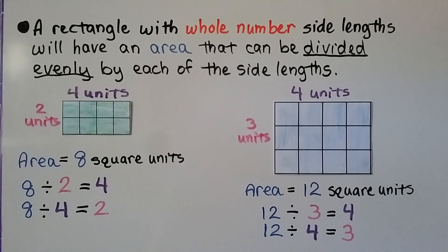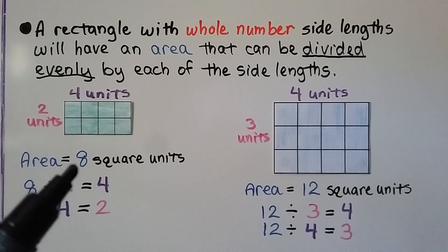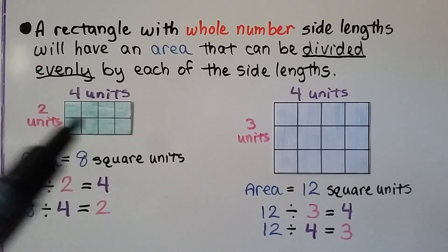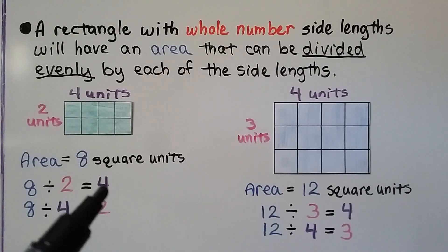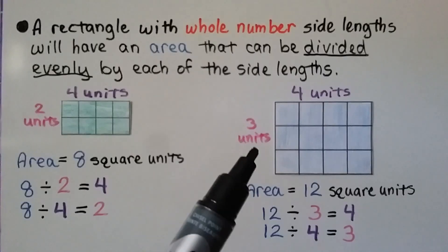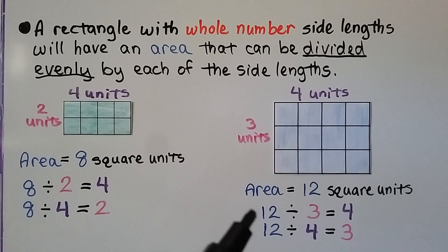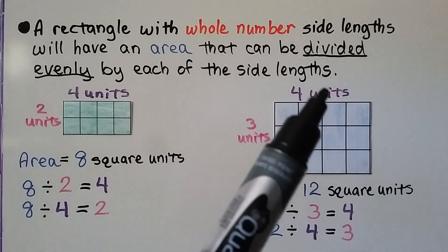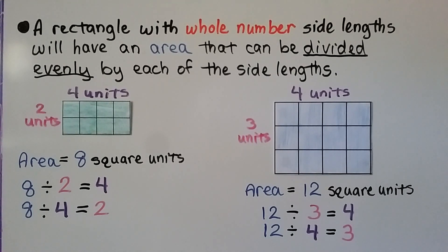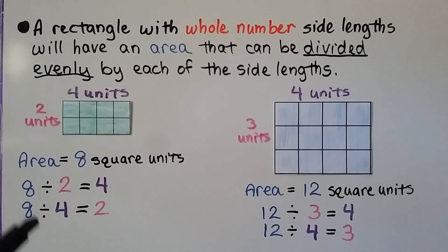A rectangle with whole-number side lengths has an area that can be divided evenly by each side length. For the green rectangle with area 8: 8÷2=4 and 8÷4=2. For the blue rectangle with area 12: 12÷3=4 and 12÷4=3. We multiply length times width to get the area, and we can find a missing side length using division, since multiplication and division are inverse operations.